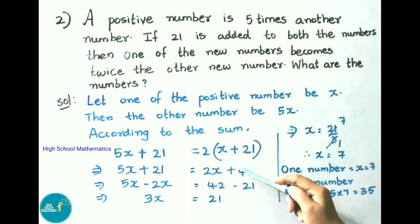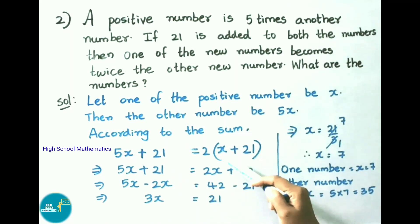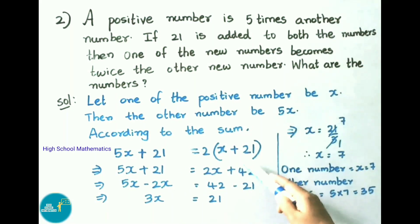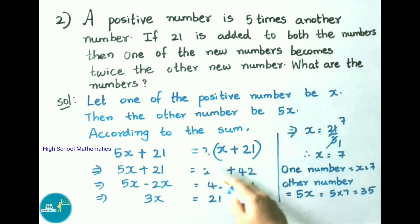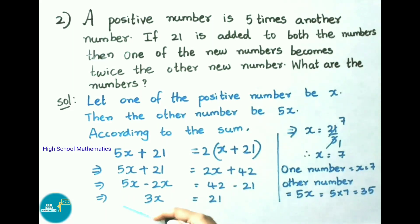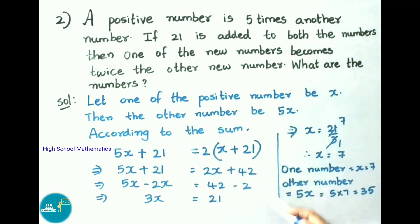According to the sum, we add 21 to both numbers. After adding, one number becomes twice the other: 5x + 21 = 2(x + 21). Expanding: 5x + 21 = 2x + 42. Transposing: 5x − 2x = 42 − 21, so 3x = 21.